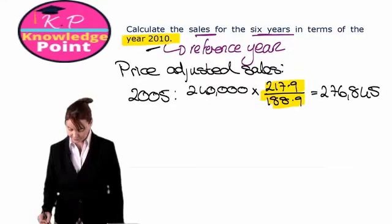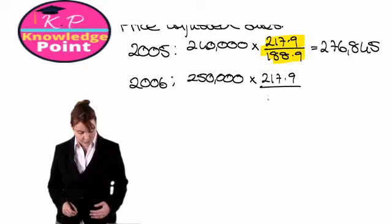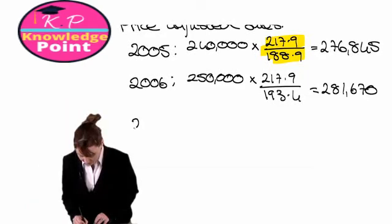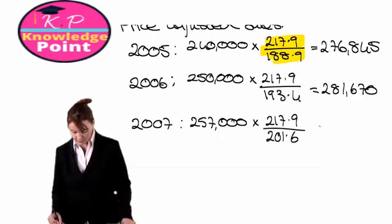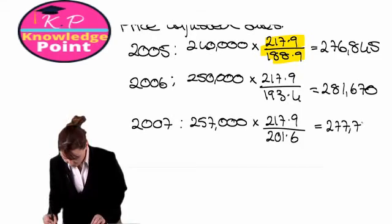We can do the same thing for 2006. Actual sales in 2006 were 250,000, multiplied by our RPI for 2010, divided by our RPI for 2006, which was 193.4. Working that through gives us 281,670. For 2007, our actual sales were 257,000, multiplied by our RPI for our reference year 2010, divided by the RPI for 2007, which is 201.6, giving us 277,779.